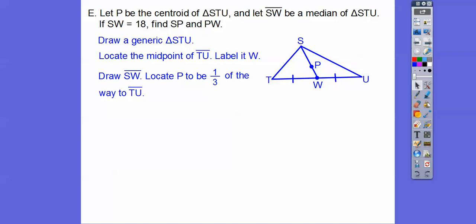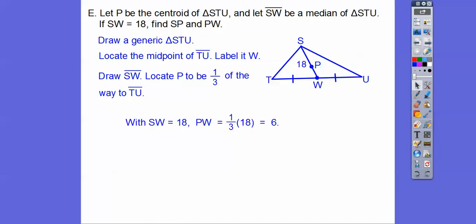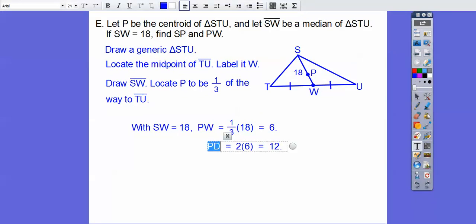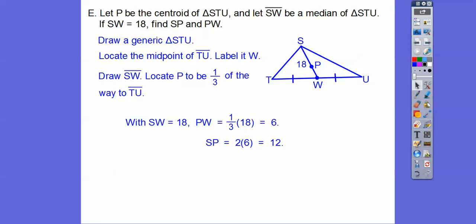Then double that to get SP. So SP will be 12. This segment PW is 6, and the whole thing SW is 18. I make mistakes all the time — the kids catch me. SP is 12, PW is 6.